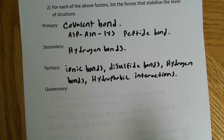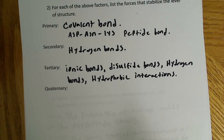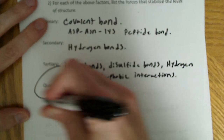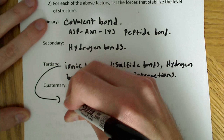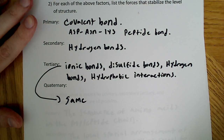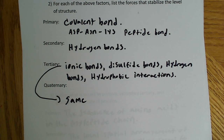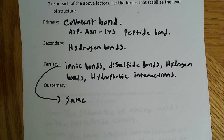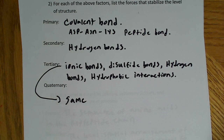The nice thing about the tertiary and quaternary structures is that these forces are all the same. Ionic bonds, disulfide bonds, hydrogen bonds, and hydrophobic interactions also occur in the quaternary structure. Once you know what stabilizes the tertiary structure, you know by default what stabilizes the quaternary structure.